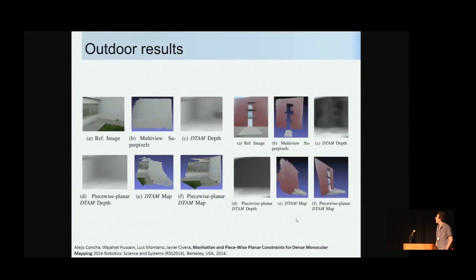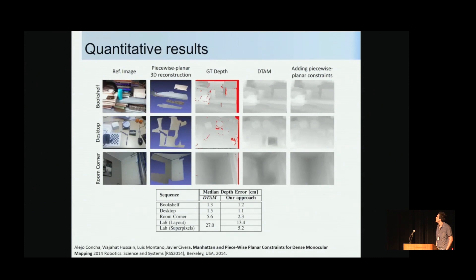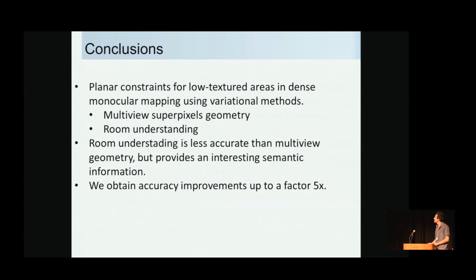Outdoor results show that walls are fixed using the piecewise planar constraints. Quantitative results in small-scale experiments show we consistently outperform standard DTAM. In conclusion, our layout approach is less accurate than multi-view superpixel geometry but provides interesting semantic information that we want to exploit in future work. Thank you.